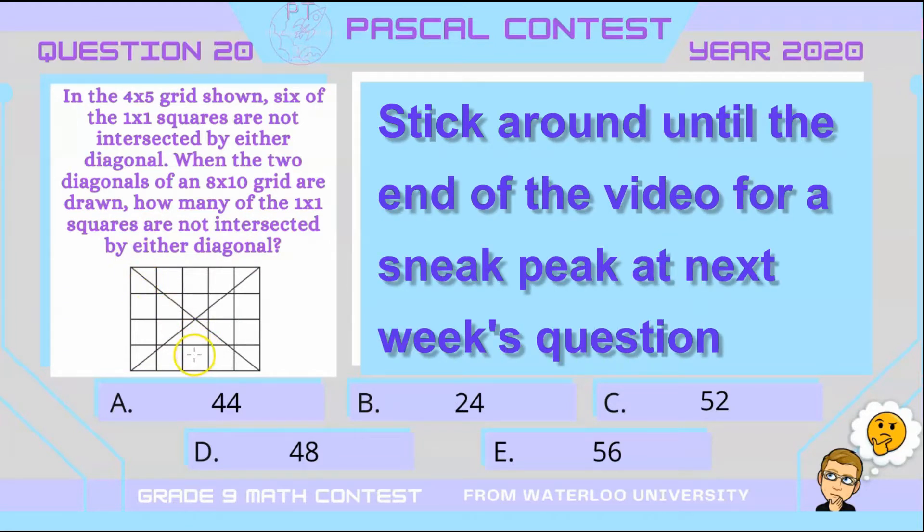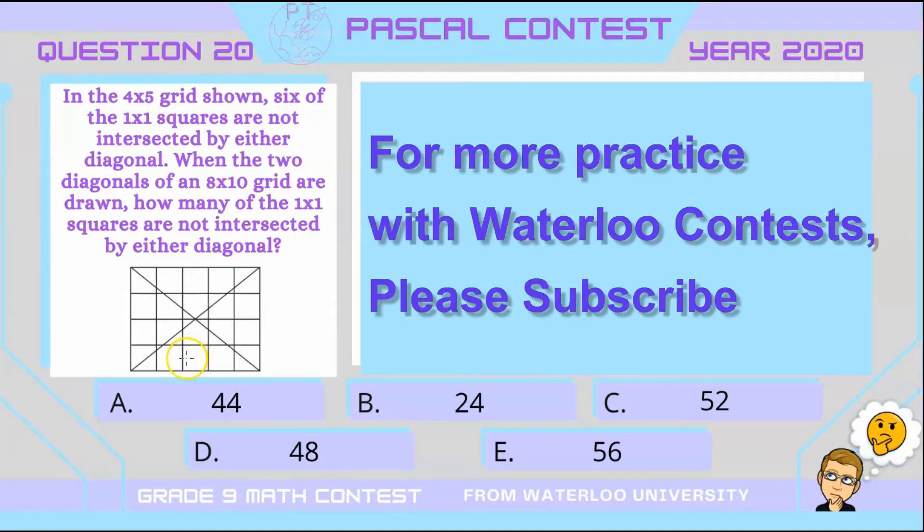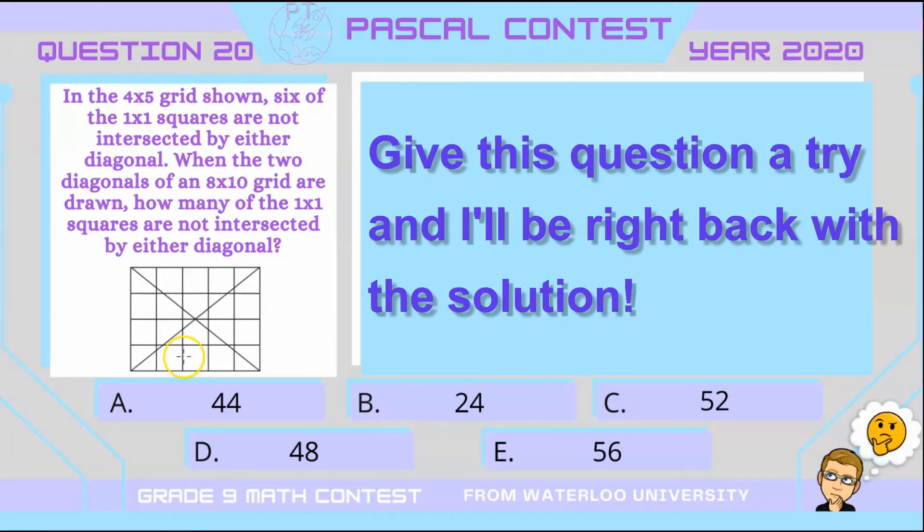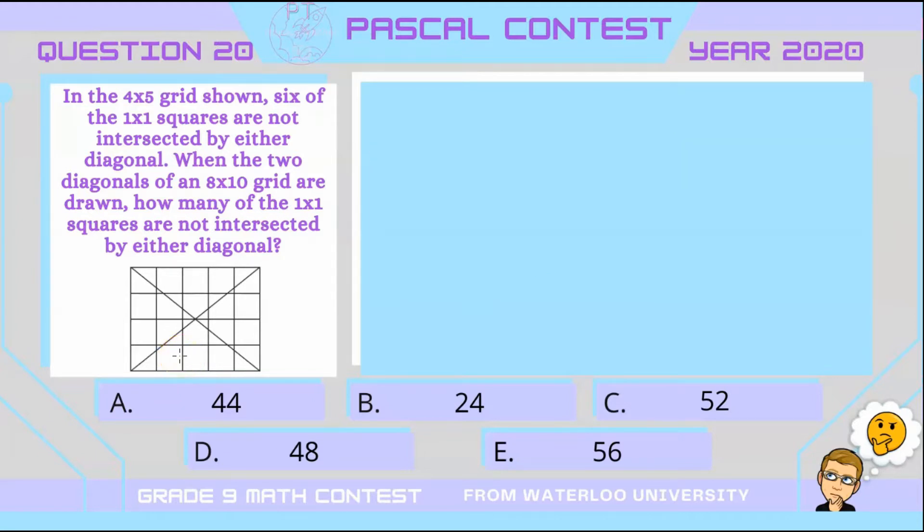And the question says, if we were to expand this into an 8x10 grid, how many of these 1x1 squares would not be intersected by either diagonal? Give it a try, and I'll be right back with the solution.